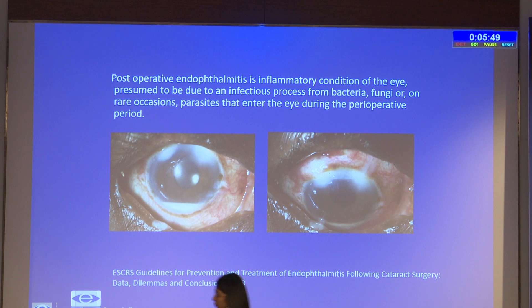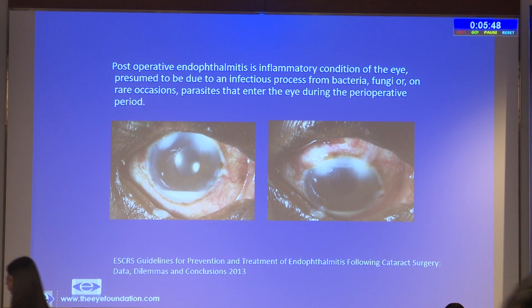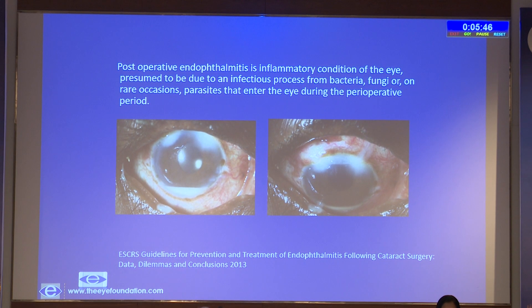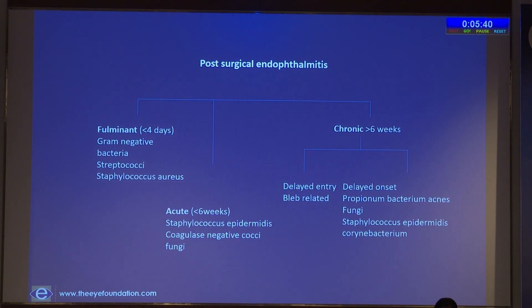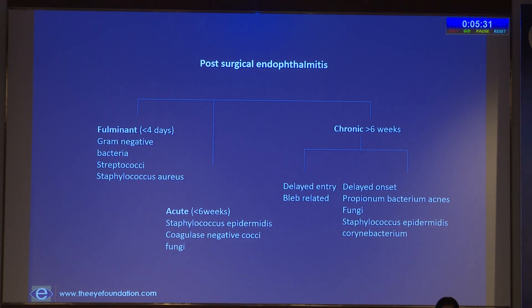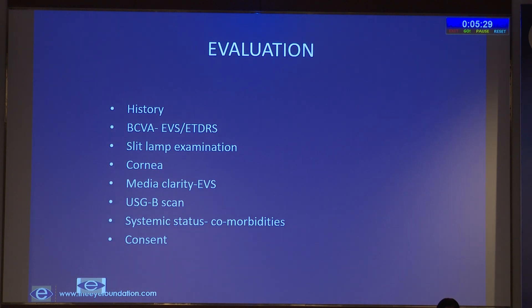Post-operative endophthalmitis is a dreadful and sight-threatening complication, so we should practice some guidelines for its management. Post-op endophthalmitis could be fulminant, acute, or chronic. Depending upon the type of organism, we need to make sure that the intravitreal antibiotic response is better for the particular organism. Once the patient has been diagnosed, we need to evaluate the patient, and history is very important regarding the surgery.